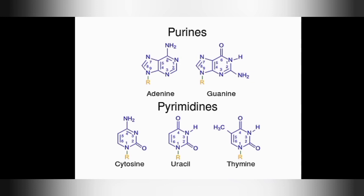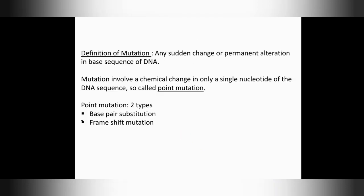What are the different bases of DNA? They are purines and pyrimidines. Purines may be adenine and guanine, and pyrimidines are thymine and cytosine. Another one is uracil, which is used for RNA. Any change in a single base sequence is the point mutation.